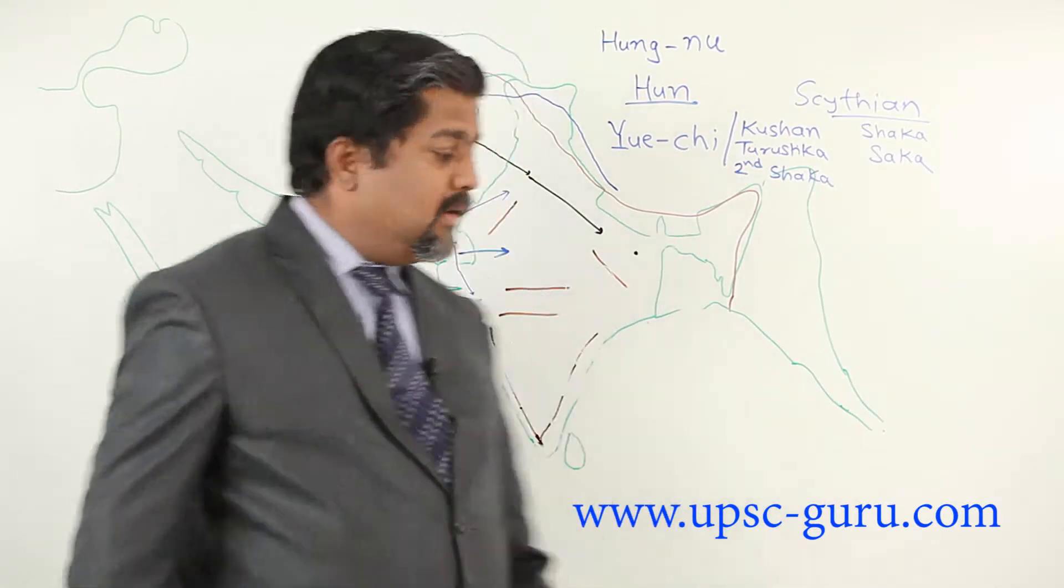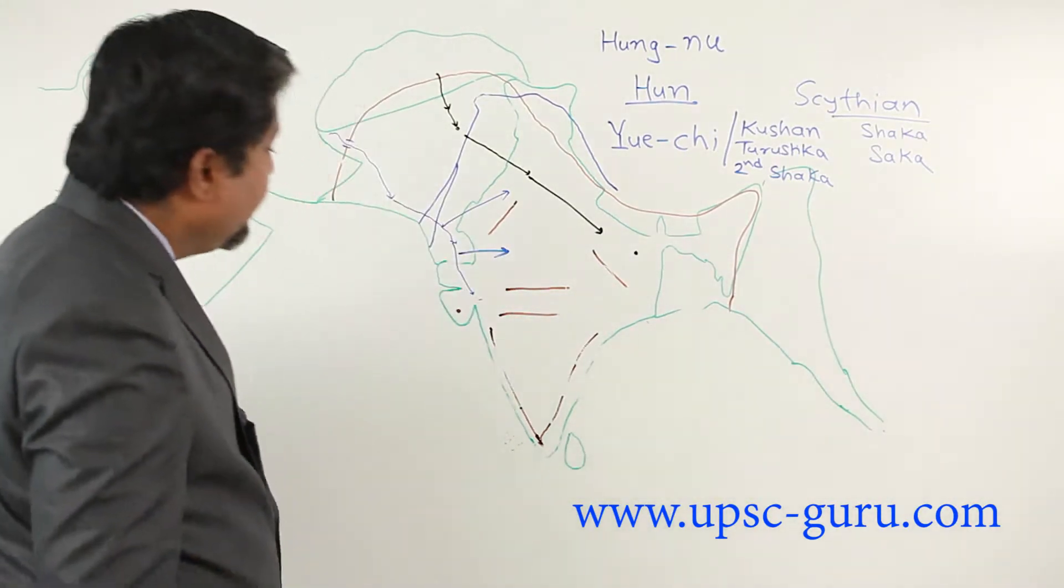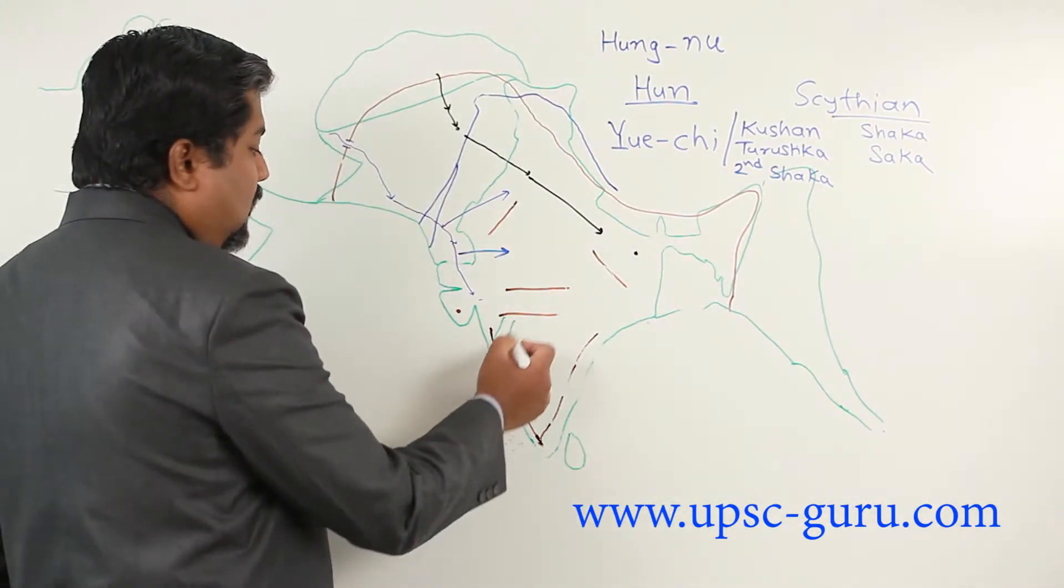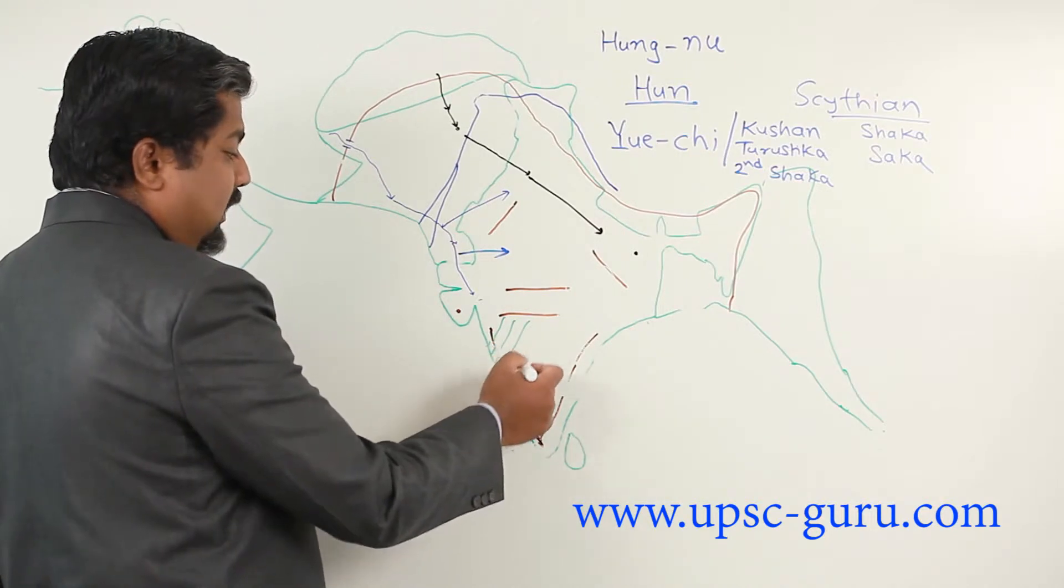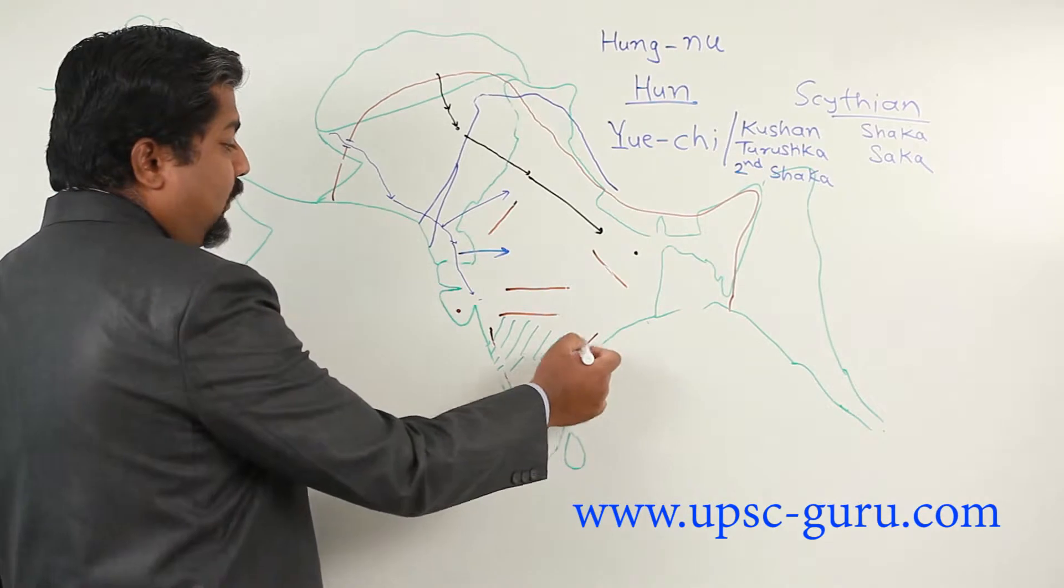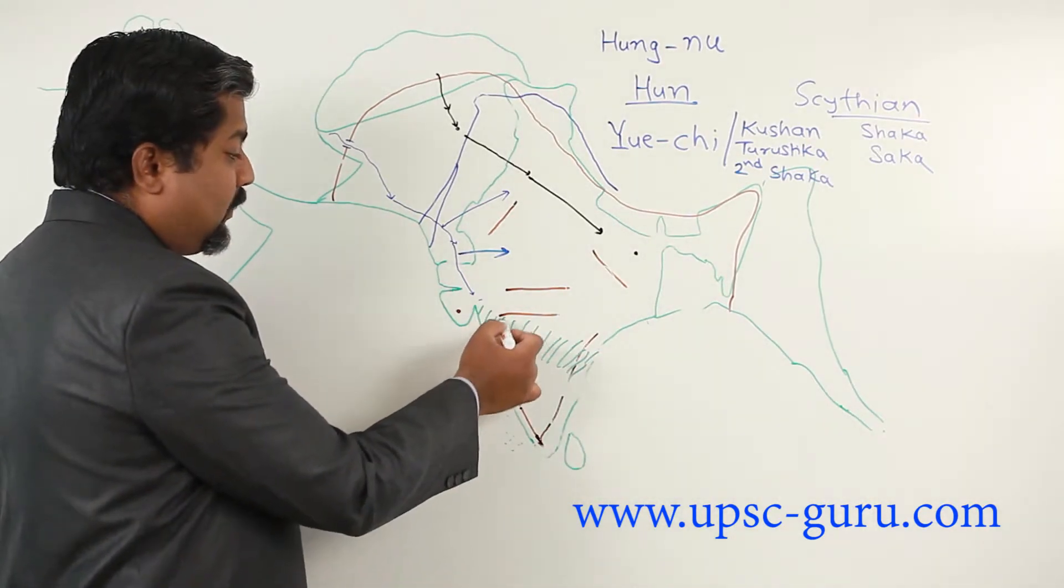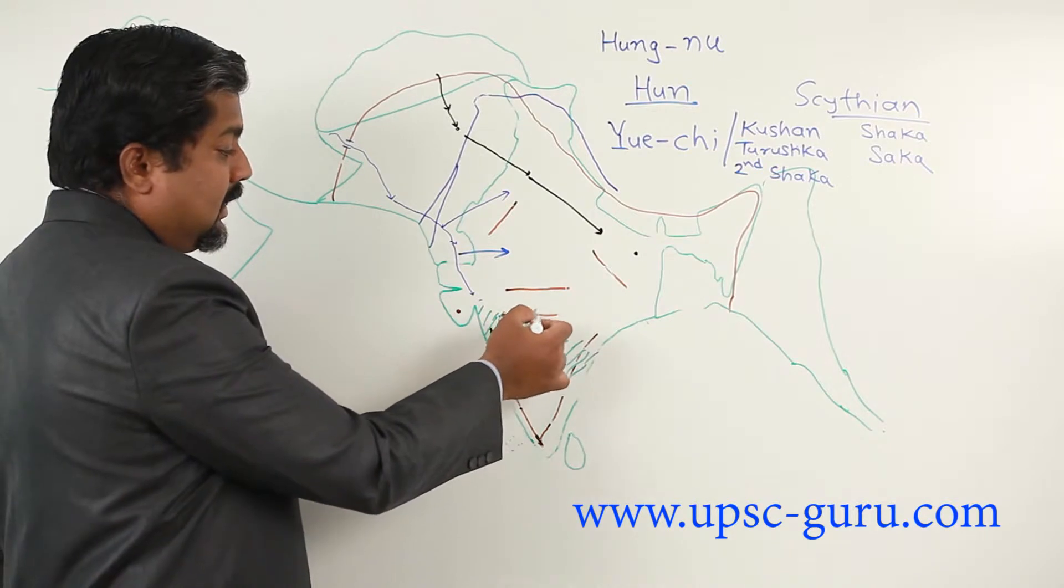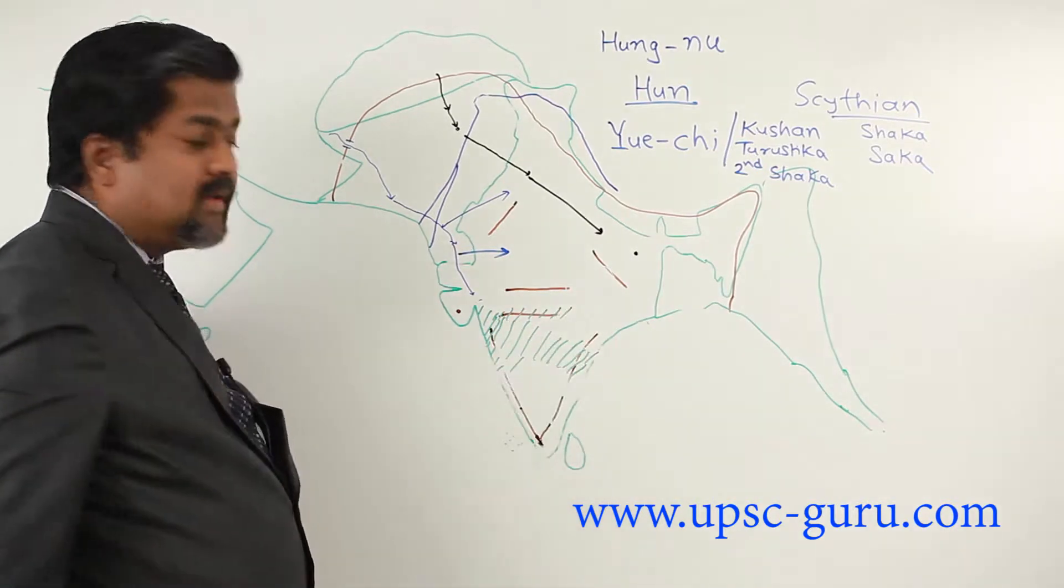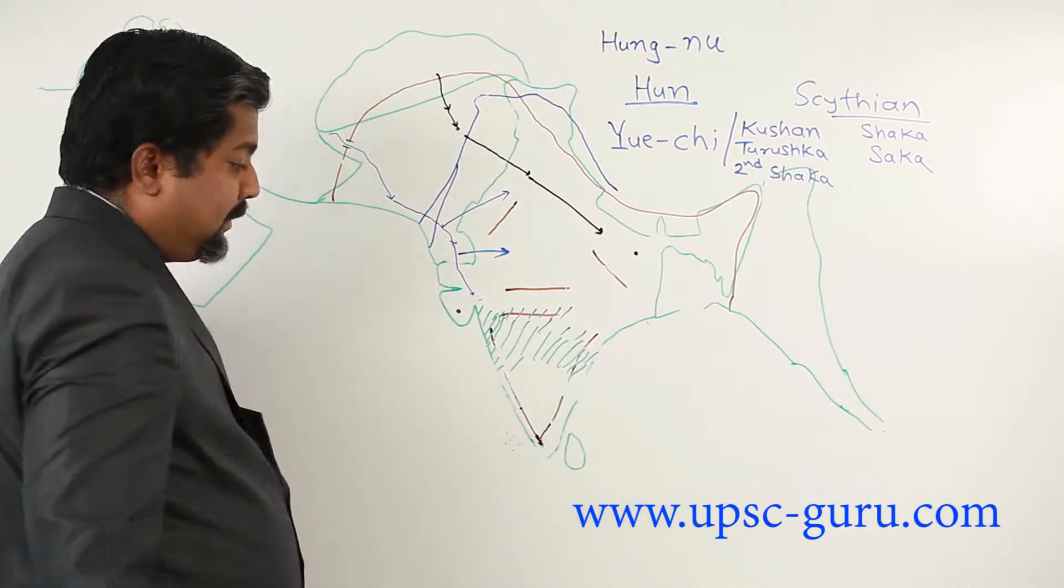His empire extended from almost entire parts of Maharashtra, then spread to parts of Andhra Pradesh, parts of Gujarat, and even crossed Satpura. This way their empire spread out.